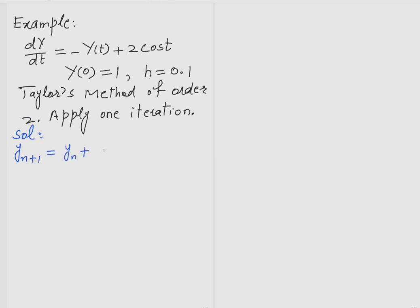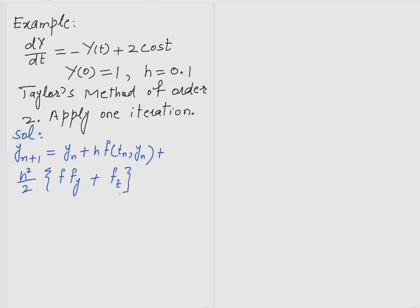The formula for Taylor's method of order 2 is: y_{n+1} = y_n + h·f(t_n, y_n) + (h²/2)·f'(t_n, y_n), where f' includes the total derivative of f.